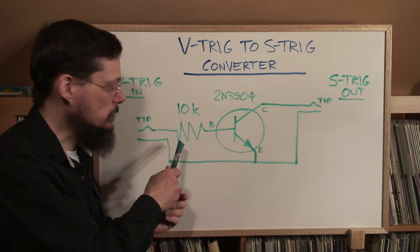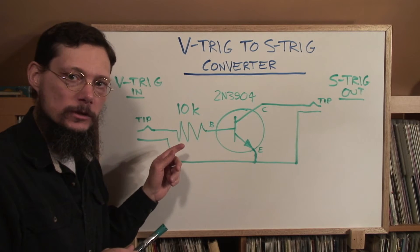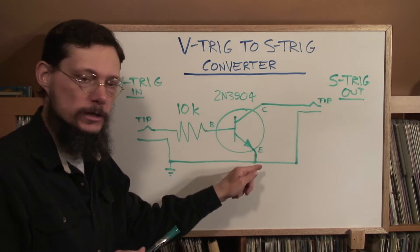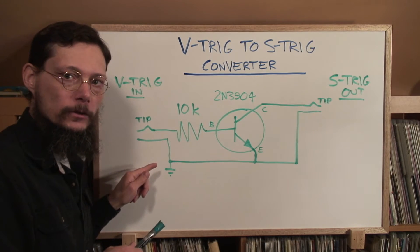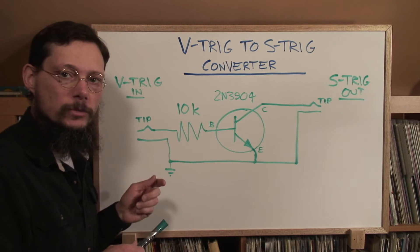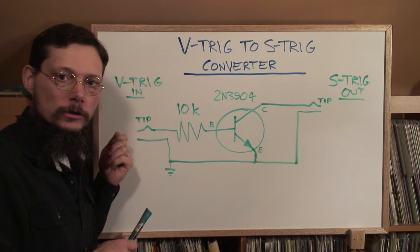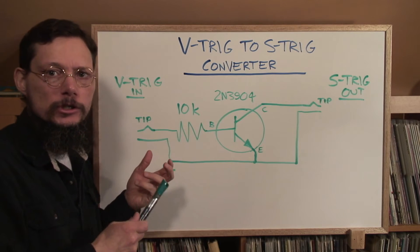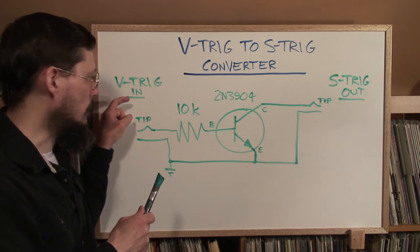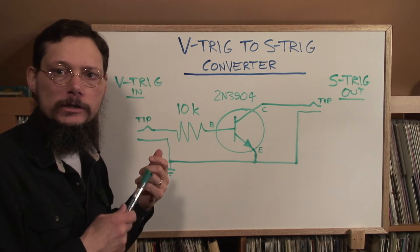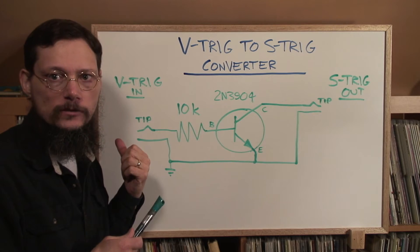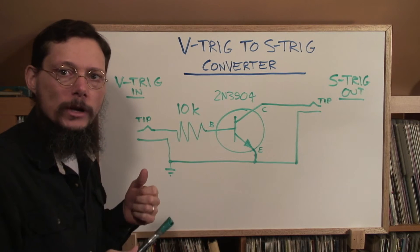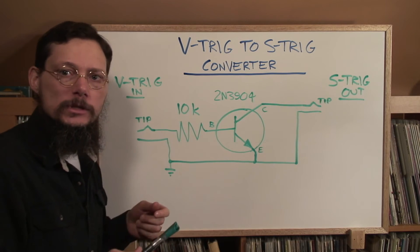Now back to the resistor. The purpose of the resistor is to limit the amount of current that can be drawn from the V-trig synth through the transistor and back through the ground. Without that resistor in place, the amount of current drawn from the V-trig synth could be quite high, and it could cause drooping voltages, which could cause flaky triggers. It could also cause things to heat up, or even, depending on the design of the V-trig synth, could cause a failure. So that resistor is quite important. Now let's build this into a cable.